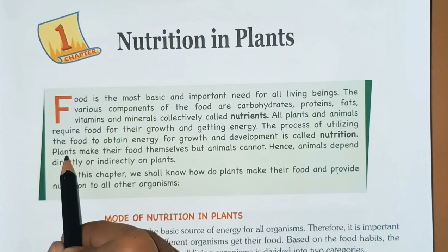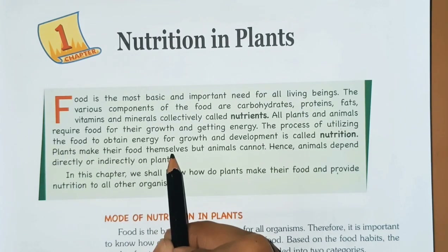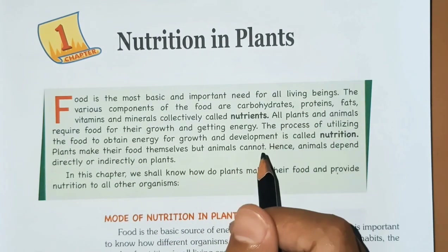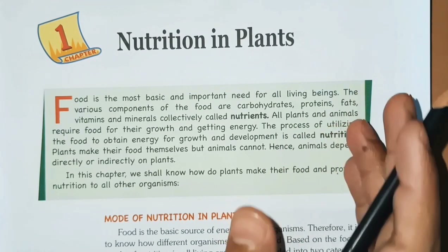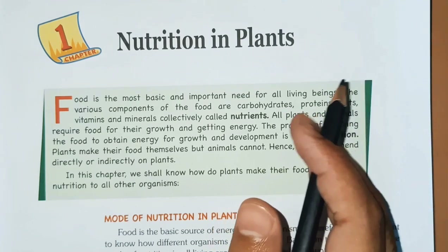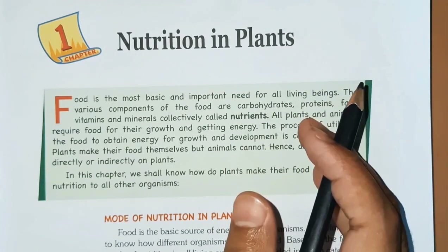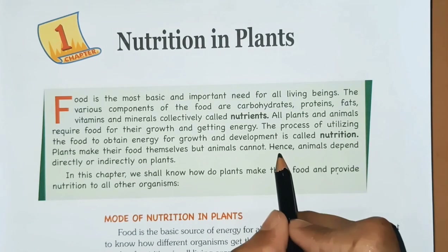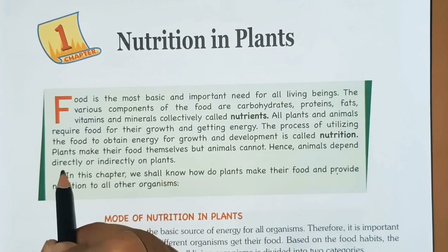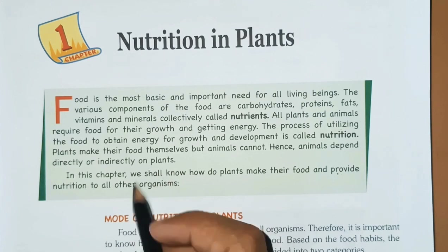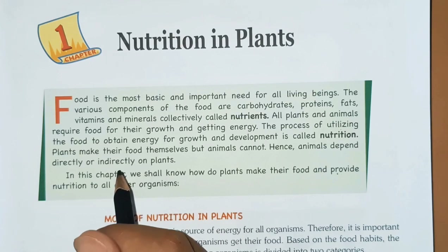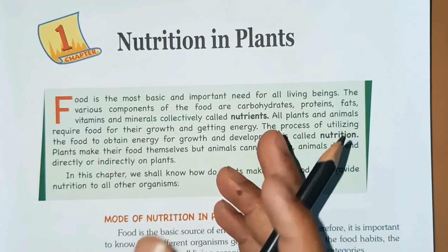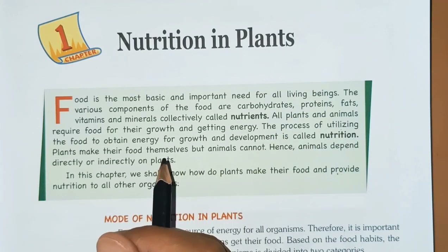Plants make their food themselves but animals cannot. In earlier classes we learned that plants can make their own food but animals have to depend on plants or other animals for food. Hence, animals depend directly or indirectly on plants. Herbivores — plant eaters like deer and goat — eat plant products directly, so they are directly dependent on plants.